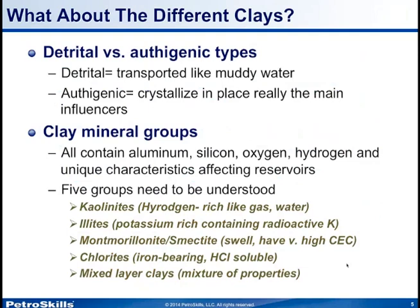There are different kinds of clays. Detrital clays are transported — like muddy water off the Mississippi or the Ganges — and are inherited from the source terrain. Authigenic clays, on the other hand, actually crystallize in place within the pore system, and are really the main influencers on our log responses. There are over 200 different clay minerals, broken into five major groups: kaolinites, illites, montmorillonites, chlorites, and mixed-layer clays. All of them contain aluminum, silicon, oxygen, and hydrogen, and each has unique characteristics that affect reservoirs.